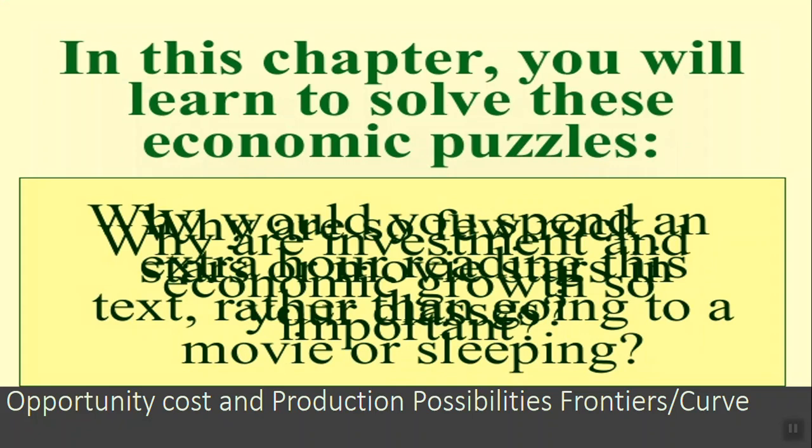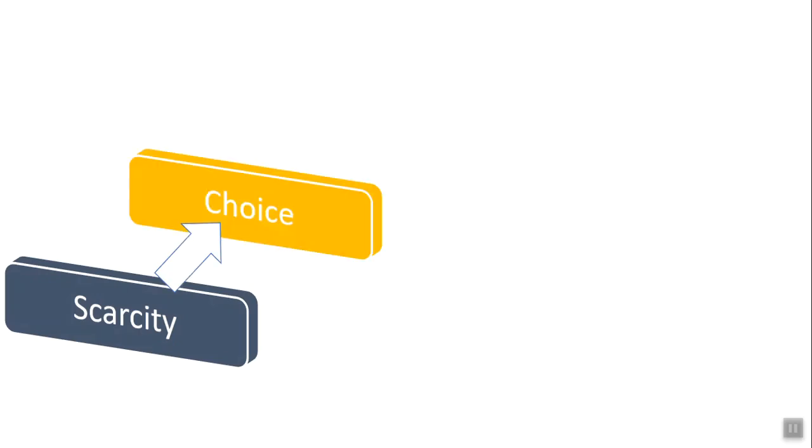Before we move forward, let's recall what we learned in our last class. We discussed that our basic problem is that our wants are unlimited and our resources are limited — which we call scarcity. Since our resources are scarce but our wants are unlimited, people have to behave in a certain manner, and the way they behave we call economics. They behave by going with the option of choices.